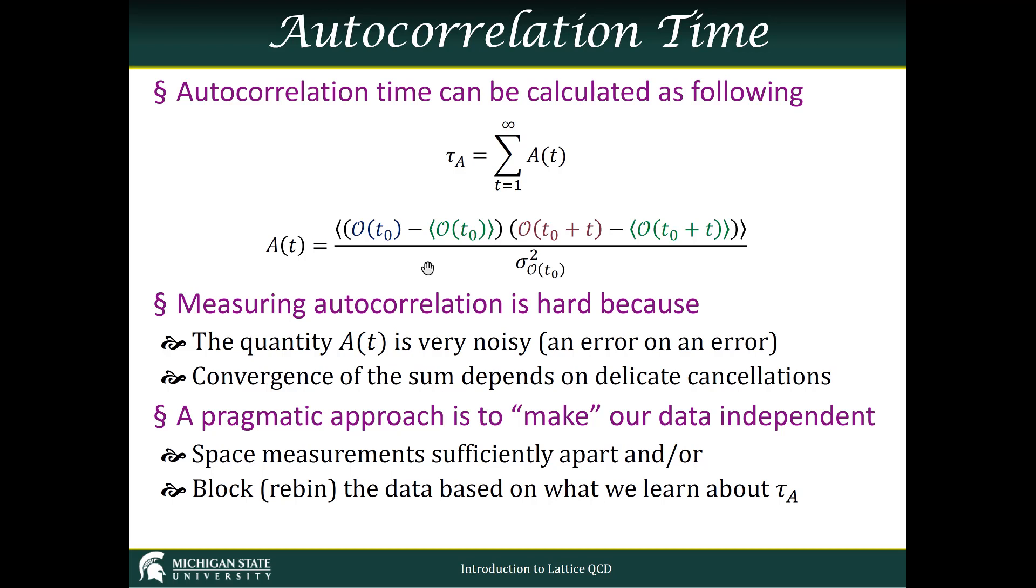But measuring the autocorrelation is actually quite hard, because this quantity A(t) is really noisy. It's basically an error on an error. We're trying to measure how bad our measure of the variance is, and that's going to be difficult unless we have a very large amount of data. The convergence of this sum depends on delicate cancellations.